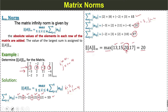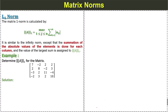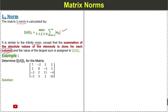Now, the L1 norm. The matrix 1-norm is calculated similarly to the infinity norm, except the summation of the absolute values of the elements is done for each column. In L-infinity norm we do the summation for each row; in L1 norm we do the summation for each column.